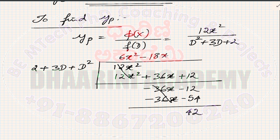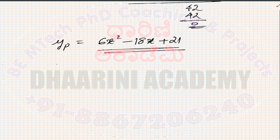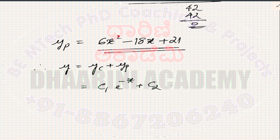We have 2 over there, so 21 × 2 = 42, giving remainder 0. Therefore yp = 6x² − 18x + 21. The final answer is y = yc + yp = c₁e^(−x) + c₂e^(−2x) + 6x² − 18x + 21.